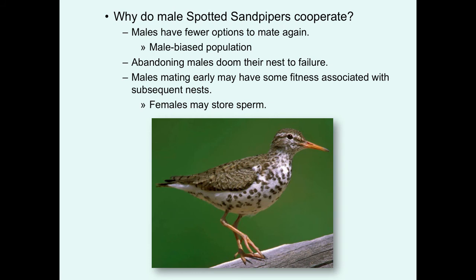Why do male spotted sandpipers cooperate? In a male-biased population, males typically can't mate again, and if a male abandons his nest, it fails — so their only option for reproductive success is to stay and care for the nest. Additionally, males that mate early with a female who becomes polyandrous may gain fitness through subsequent clutches, as females appear to store sperm. A male's sperm fertilizes eggs for the clutches he tends, and stored sperm may also fertilize subsequent clutches.